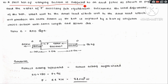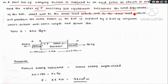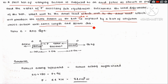Next question: a bar of varying cross-section is subjected to an axial force as shown in the figure. Find the value of P necessary for equilibrium. Determine the total deformation of the bar. The bar has three sections: section 1 is 1 m long with area 400 mm², section 2 is 1.5 m long with area 800 mm², and section 3 is 0.5 m long with area 600 mm². Loads applied are 60 kN, 120 kN, and 96 kN.